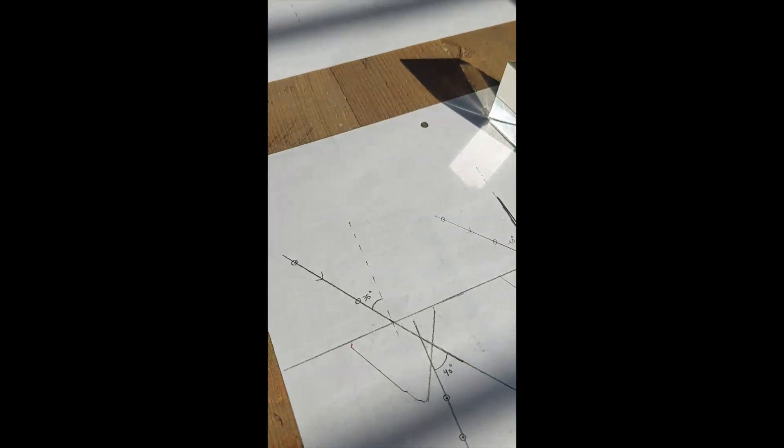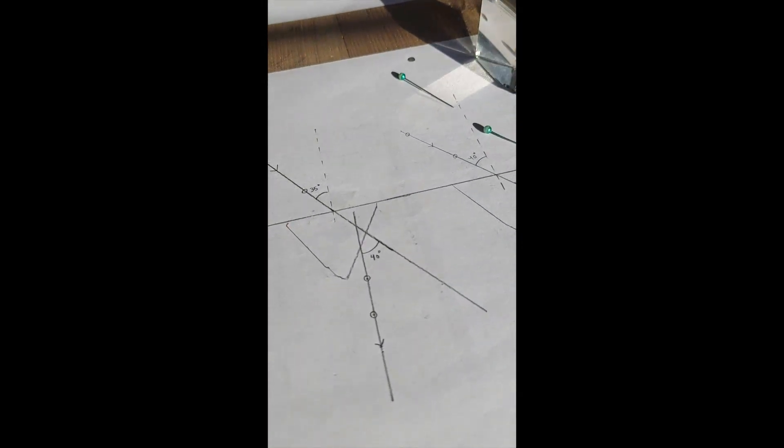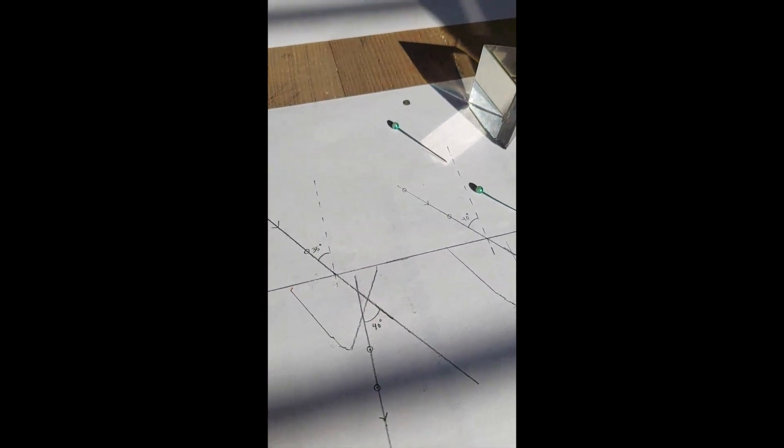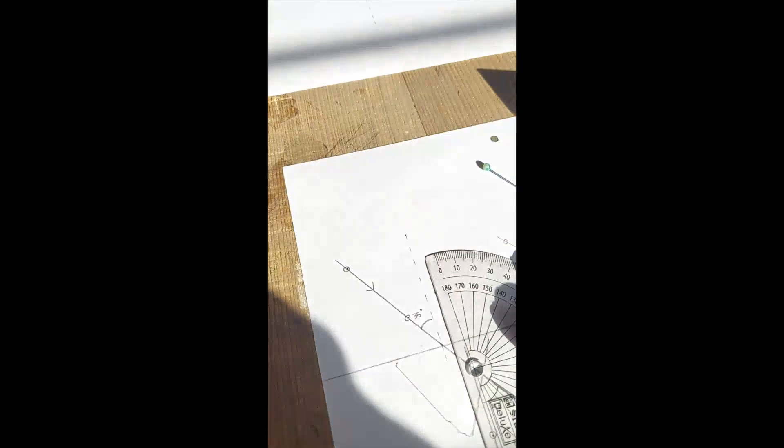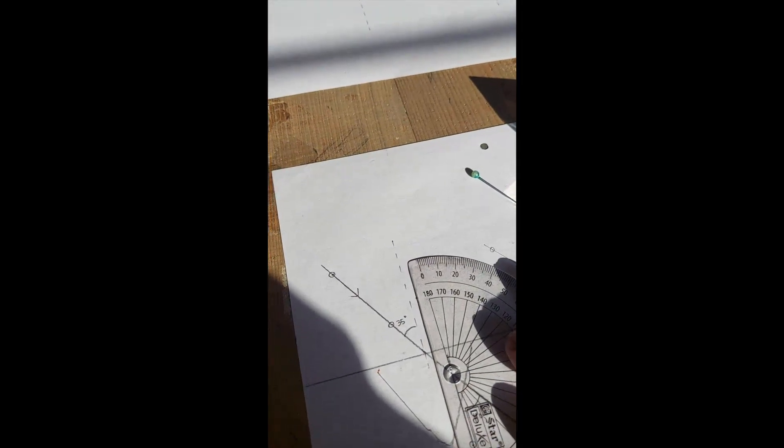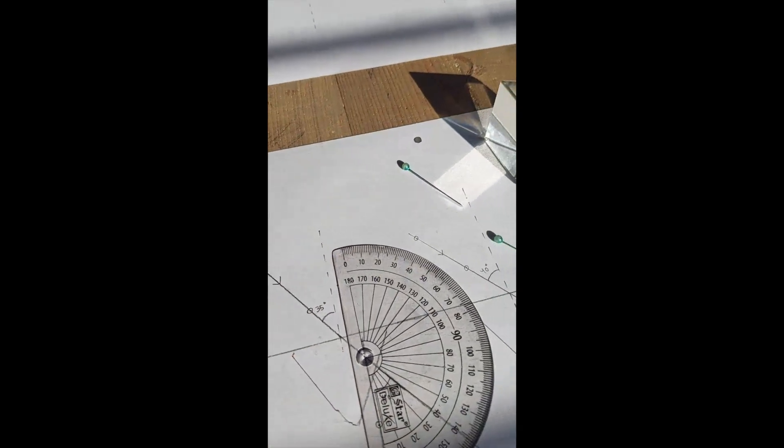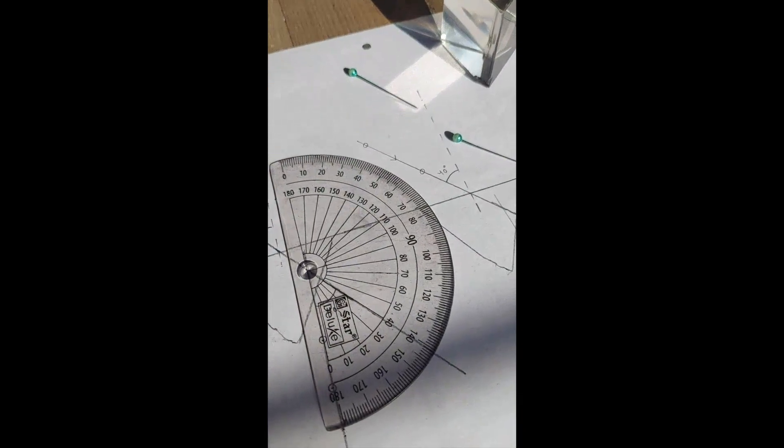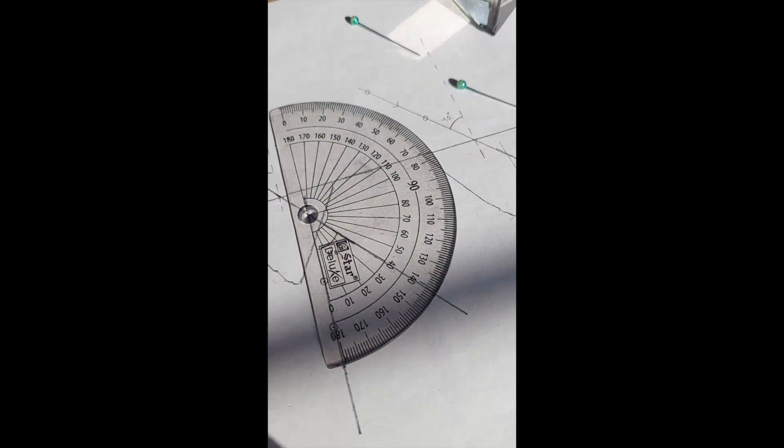I will show you how to place the protractor. You place the protractor like this, the intersection point on the intersection point of the protractor, and measure the angle of deviation. The angle of deviation as you can see comes out to be 40.